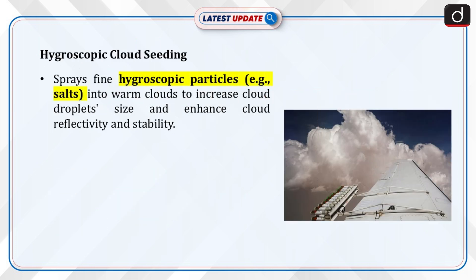Third, Hygroscopic cloud seeding: this method involves spraying fine particles of hygroscopic materials, such as salts, through flares or explosives into the base of warm clouds. The particles act as cloud condensation nuclei and increase the number and size of the cloud droplets, which enhances the reflectivity and stability of the clouds.